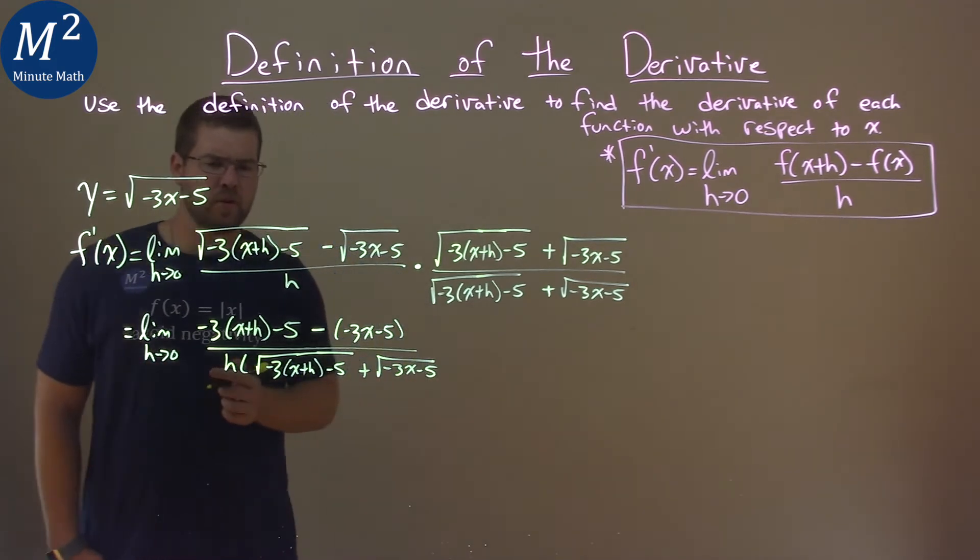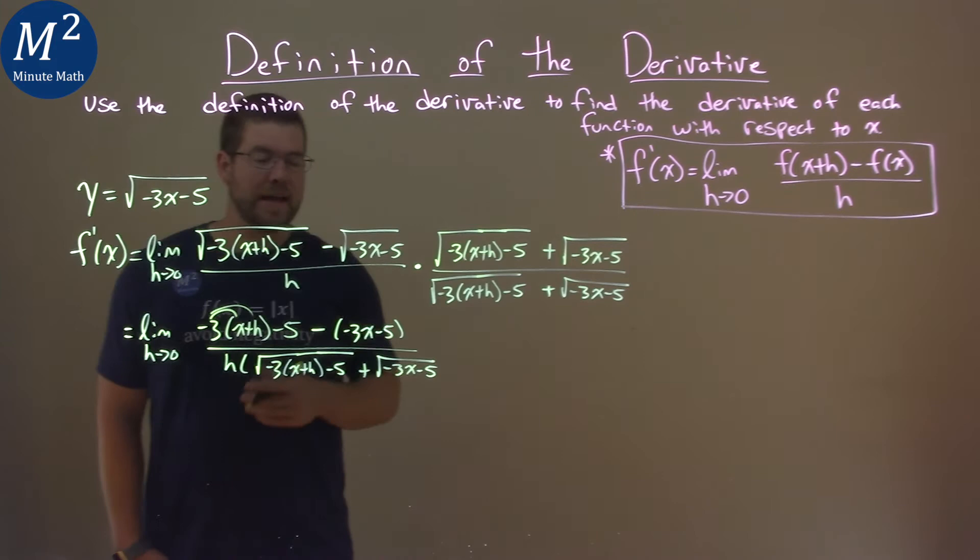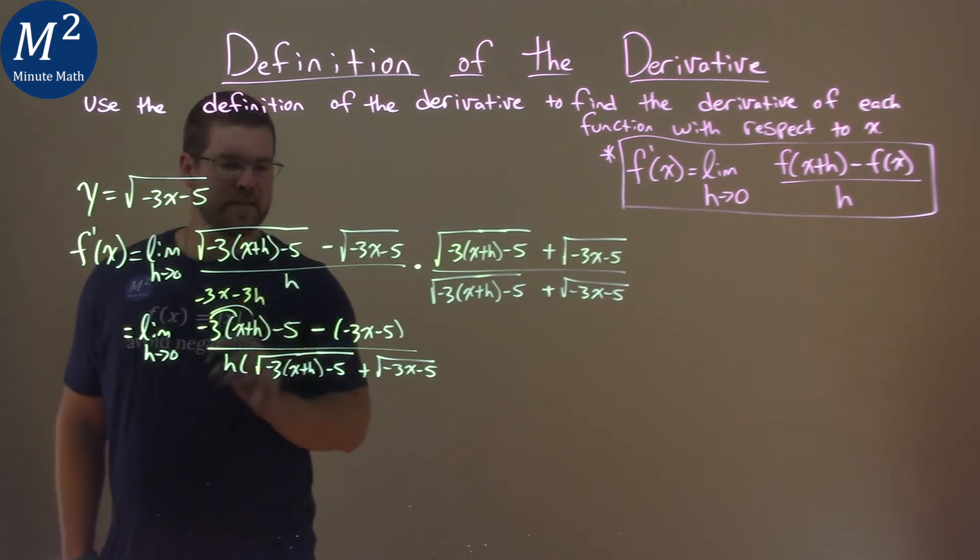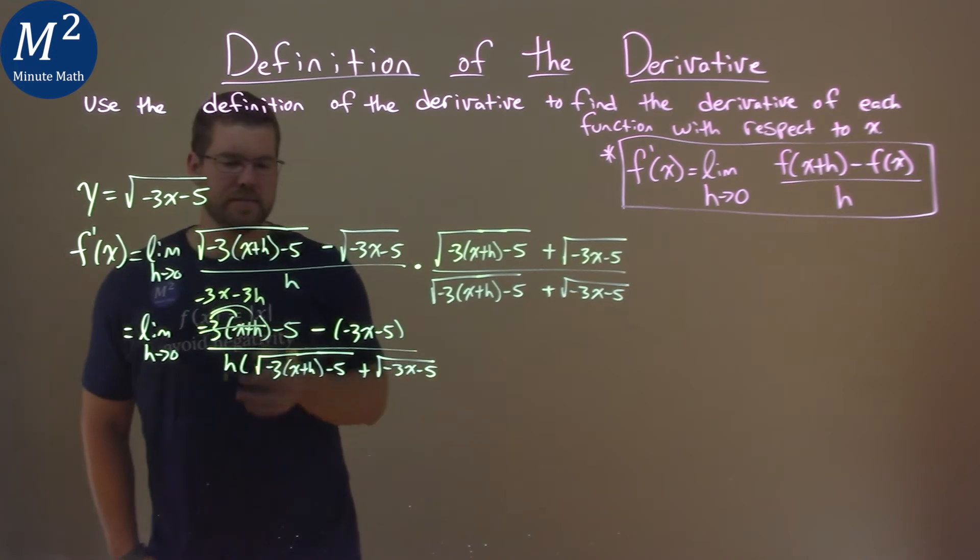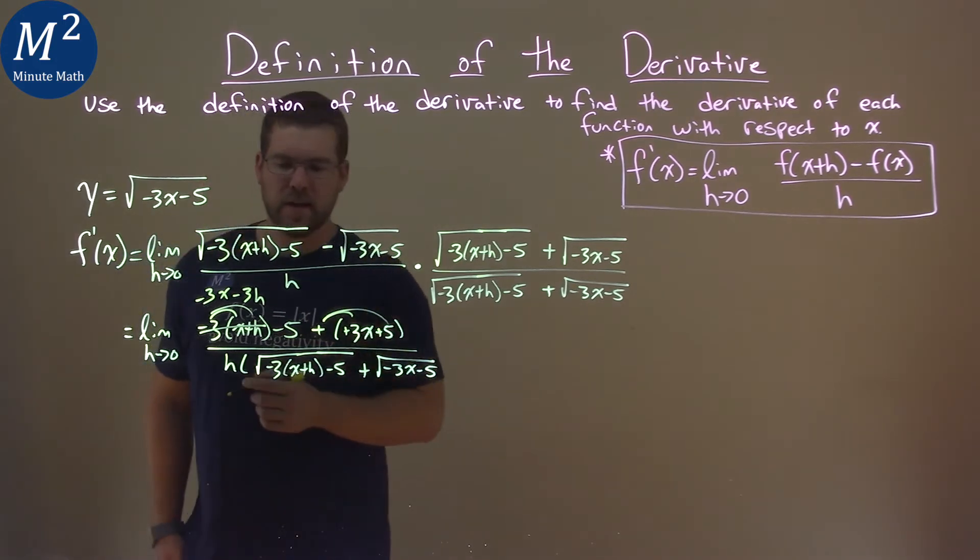Okay. Now, what cancels in the numerator? If I distribute the negative 3 to the x and the h, we have a negative 3x minus 3h. I like to sometimes just leave that there, it kind of makes it a little easier. If you need a positive, look at it, take your time. Minus goes across here, so that's a plus positive. This becomes a positive as well. Now, let's cancel where we can.